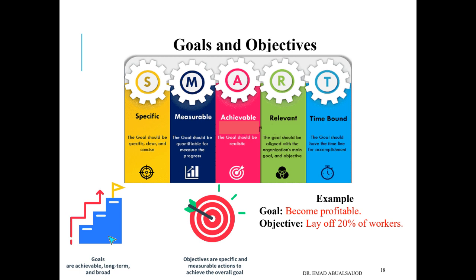The SMART model for goals means: Specific, Measurable, Achievable — you can actually achieve it — Relevant to your organization, and Time-bound — you must set a time frame for when you want to achieve these goals.